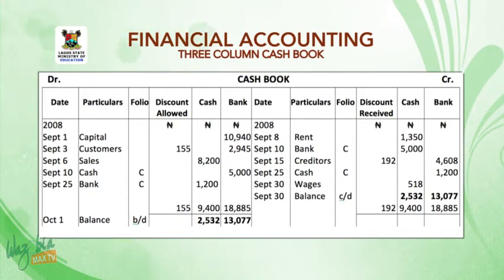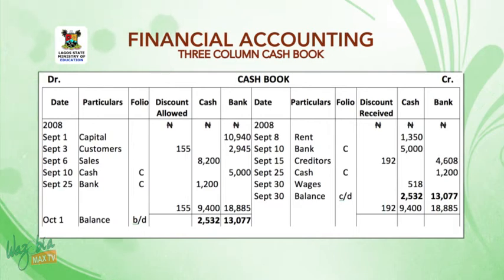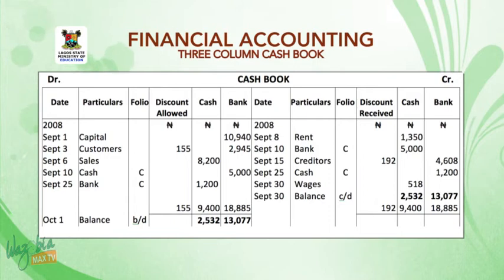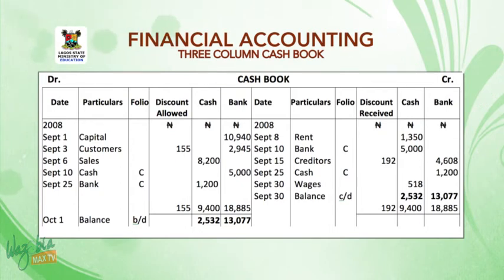The next transaction is September 8. We paid rent by cash — money goes out, so you go to the credit side. Under particulars you write 'rent', and under cash you write $1,315. Then September 10 — bank the cash held by the business. This is what we call a contra-entry. You have some cash in the business and you deposit some of it into the bank, meaning cash goes out from the business and enters the bank.